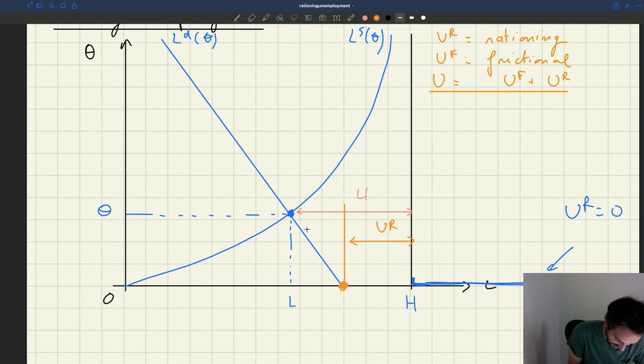But then you can see that unemployment is bigger than this. You can see that there is an additional amount here of unemployment, besides rationing unemployment. So you can see that in actuality, the tightness is higher than just zero. And so firms, they hire fewer workers than at the point in which tightness is equal to zero.